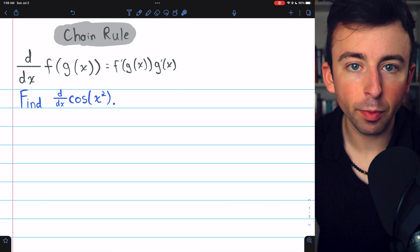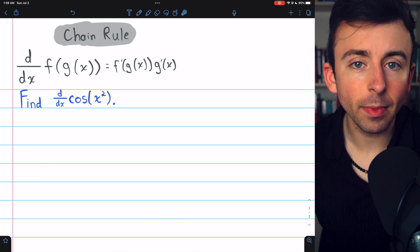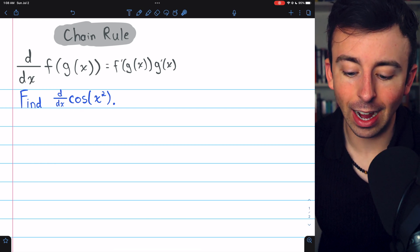In this case, our f, our outside function, is cosine, and our g, our inside function, is x squared.